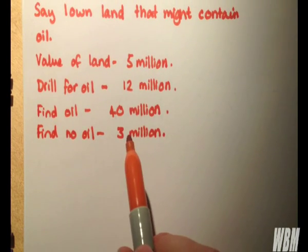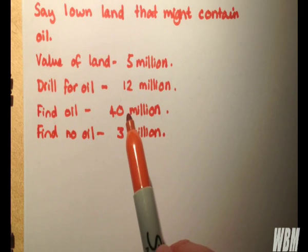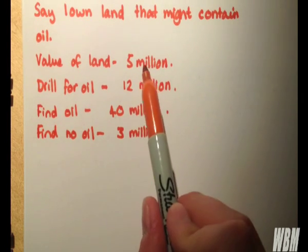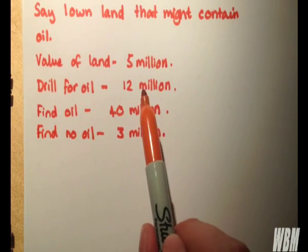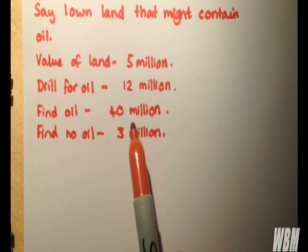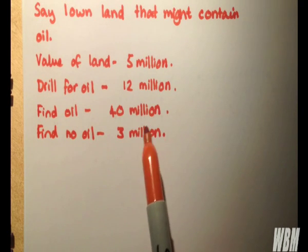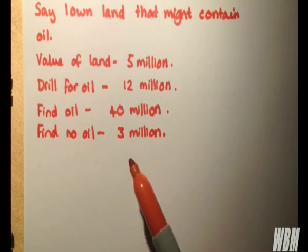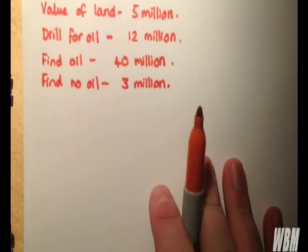So what decisions can we make? We can either sell the land for 5 million, or we can take a gamble, drill for oil and see whether it's oily or dry. So there are four possible outcomes. Let's draw a table to visualize this.